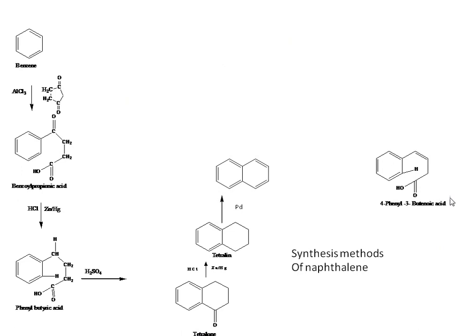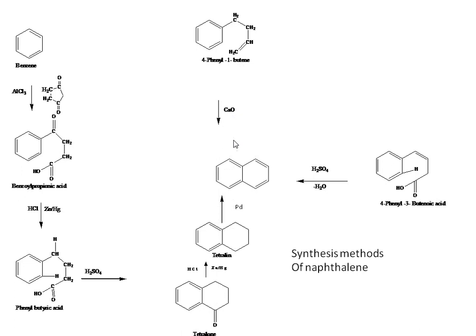Additional synthesis methods for naphthalene include: reacting phenyl-3-butenoic acid followed by cyclization with removal of water in the presence of sulfuric acid to get naphthalene; reacting 4-phenyl-1-butyne with calcium oxide to form naphthalene; and heating petroleum (petrolane) at 680°C in the presence of sulfuric acid to form naphthalene. In summary: first method is Haworth synthesis; second is from 4-phenyl-3-butenoic acid; third is 4-phenyl-1-butyne; fourth is from petroleum.